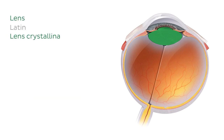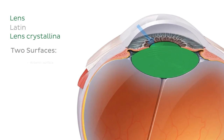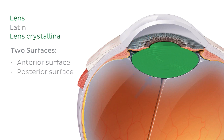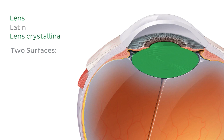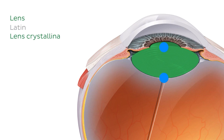Now let's discuss the lens surfaces and some important associated terminology. The lens has two surfaces: an anterior surface and a posterior surface. It should be noted that the convexity of the anterior surface is less steep than that of the posterior surface. Both surfaces have a central point — the anterior and posterior pole. The imaginary line connecting these two poles is termed the lens axis, and the marginal circumference of the lens is called the equator.